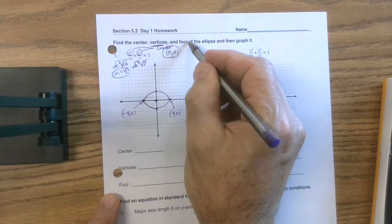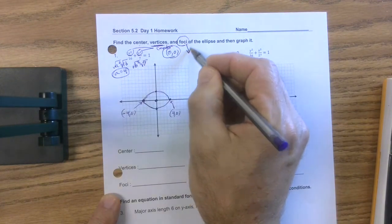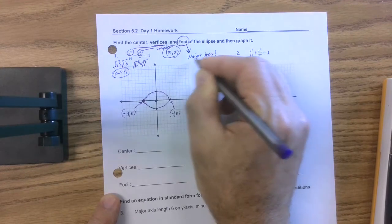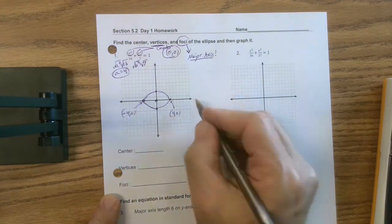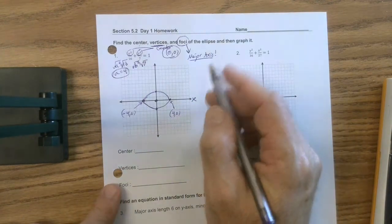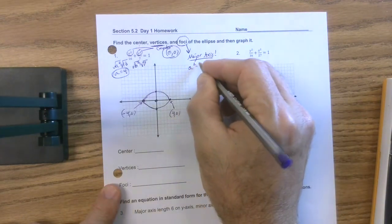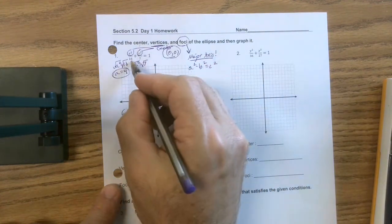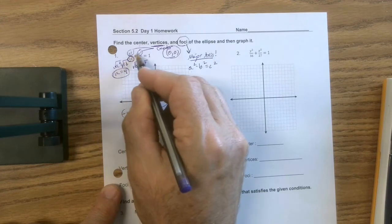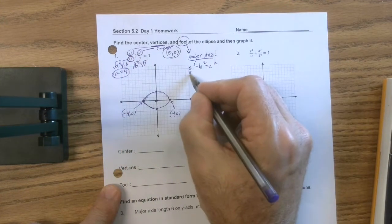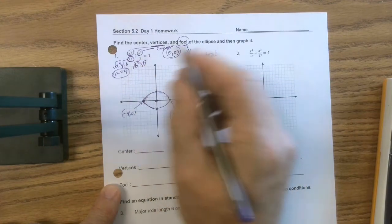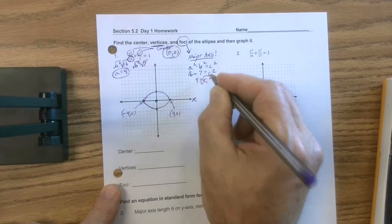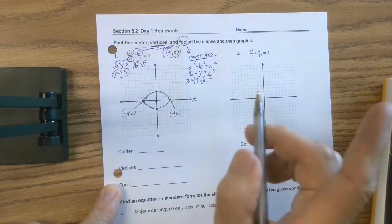And then it says, and find the foci. Remember, the foci are always on the major axis, which is huge. And in this case, that happens to be the x-axis. And we're going to use the formula, a squared minus b squared equals c squared. a squared is the original largest number underneath whichever variable it happens to be under. But it's 16 minus the smaller of the two, 7, equals c squared. So 9 equals c squared.